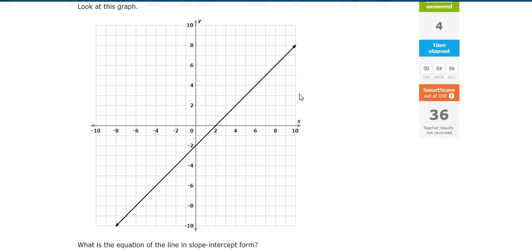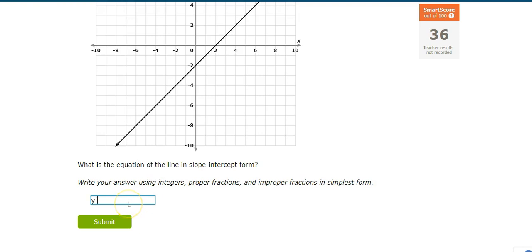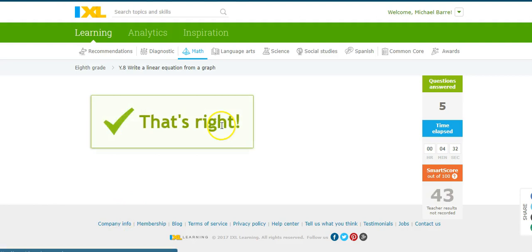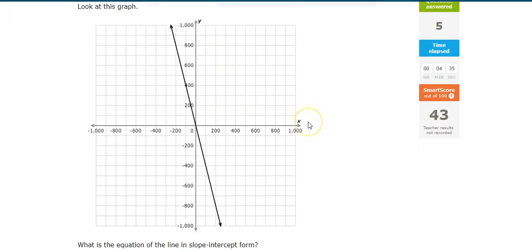Oh, I'm still looking for a negative slope. Let's see. This guy, y equals, what's the slope of this? The slope is 1 over 1. So that's just an x, intercept negative 2. y equals x minus 2. y equals x minus 2. There's a negative slope. Excellent.